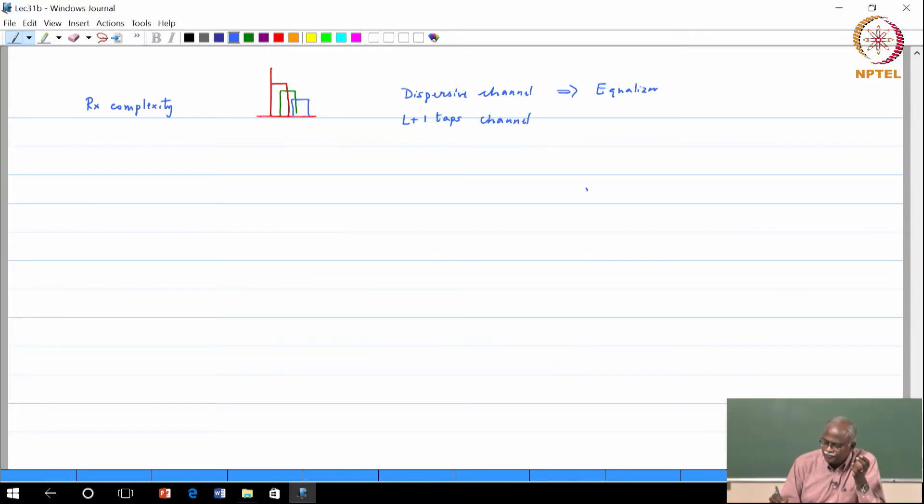If this is my channel model, my received signal RX signal contains L symbols of ISI. That is what it means. And I am sure you are familiar with this notation - L symbols of ISI.